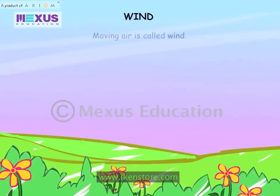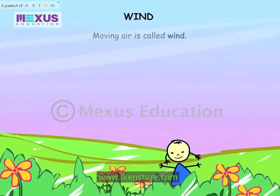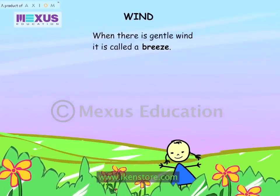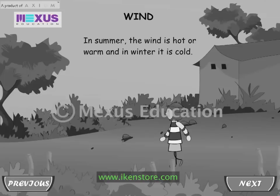Moving air is called wind. When there is gentle wind, it is called a breeze. Strong winds lead to a storm which causes damage to life and property. In summer, the wind is hot or warm, and in winter, it is cold.